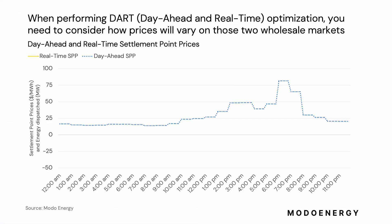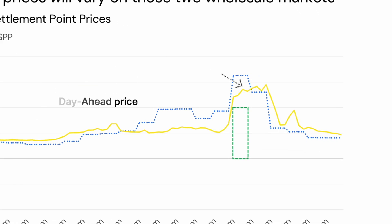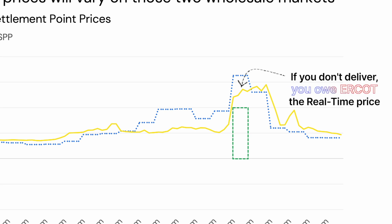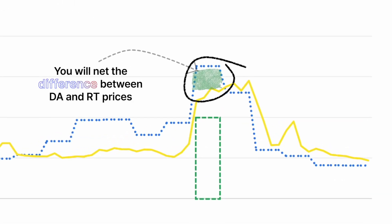This presents an opportunity for non-physical trading. Say you sell energy in the day-ahead market, but then the real-time price is lower than the day-ahead price — actually because demand is lower than anticipated. If you then don't deliver in real time, you actually owe the real-time price. As a result, your net revenue will be the difference between the day-ahead and the real-time prices. Essentially, this means earning revenues without having to actually discharge any energy.